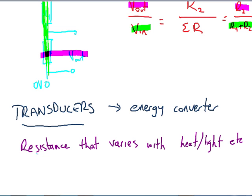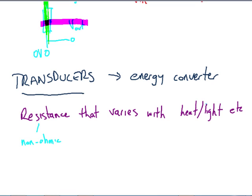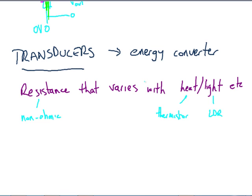What we need to note is that the resistance - we're not looking at ohmic resistance, we're looking at something that varies. Generally we seem to get these graphs that probably are more like a logarithmic scale rather than just a simple linear scale. So just be aware when you're checking the graph, look at the scales carefully. Heat example might be a thermistor, light maybe an LDR.